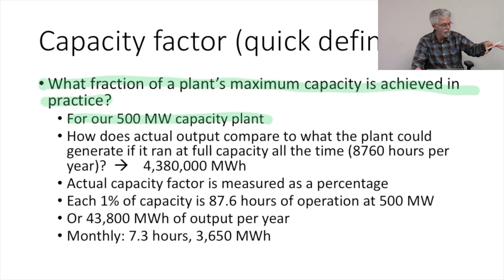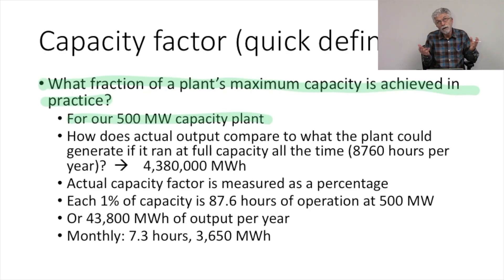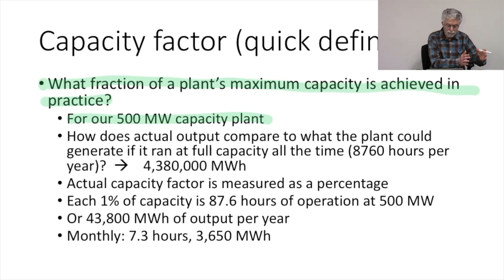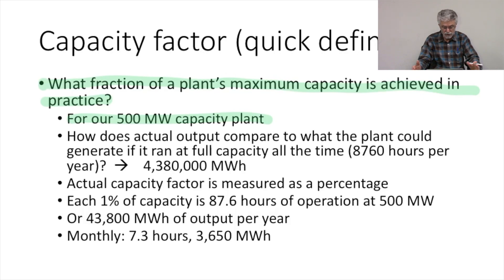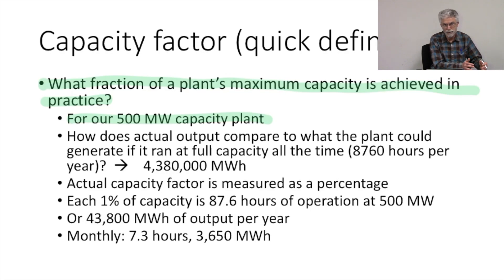The capacity factor is a measure of how what we're actually generating compares to what we could generate if the plant ran at full capacity for the entire period. Moving this down to monthly capacity: a month has about 730 hours. A 1% capacity factor in a month would have the plant running about 7.3 hours, generating about 3,600 megawatt hours. The full monthly capacity would be running at 500 megawatts for 730 hours; a 1% capacity factor has 500 megawatts running for 7.3 hours a month.